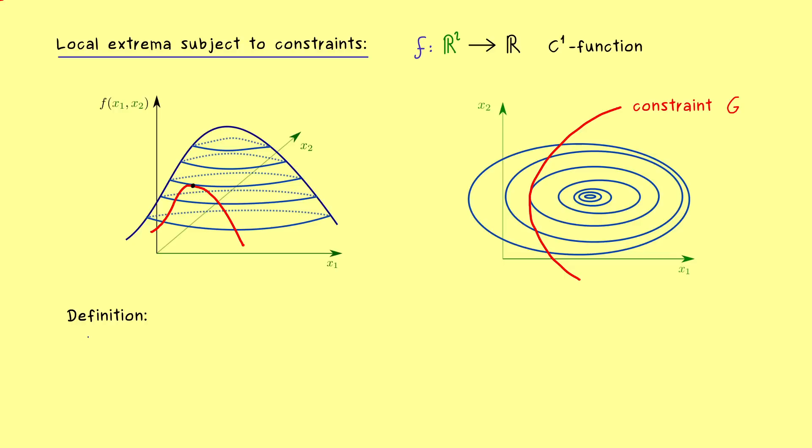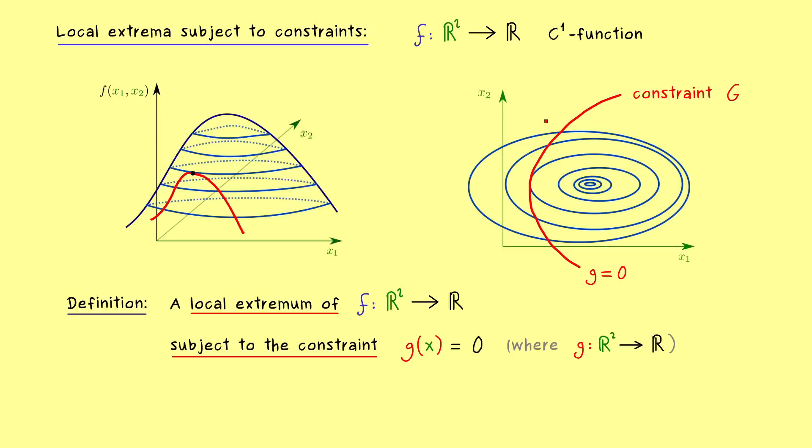But before we do that, we first should formulate everything in a formal definition. So we will say that we have a local extremum of f subject to a given constraint. And this constraint will be formulated as a function lowercase g of x is equal to 0. So this means the constraint we have in the picture is formulated as a contour line as well. So we always have a second function g defined on R² as well. And then we just take a contour line for g and usually we take the one with value 0. And obviously this is not a restriction at all, because we can always translate the function such that the value is equal to 0. However, usually we want that the constraint function g is a C¹ function as well.